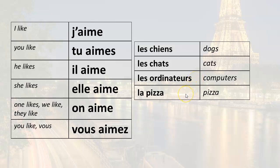He likes dogs: il aime les chiens. He likes cats: il aime les chats. He likes computers: il aime les ordinateurs. He likes pizza: il aime la pizza. She likes dogs: elle aime les chiens. She likes cats: elle aime les chats. She likes computers: elle aime les ordinateurs. She likes pizza: elle aime la pizza.